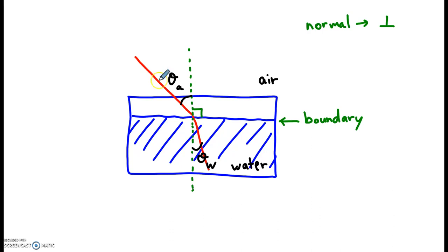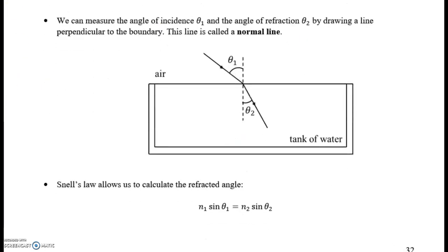So the light is traveling from the air into the water. Now we call this, let's go back to the prior page. We call this, theta 1, the angle of incidence. Because incident means striking, or hitting. This is the angle of refraction.